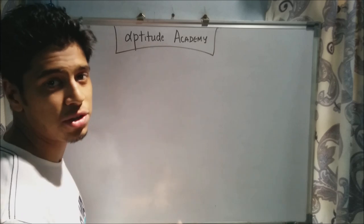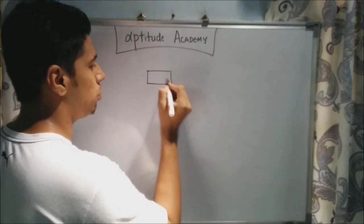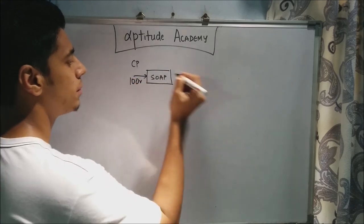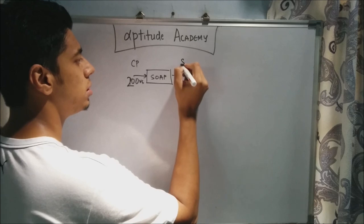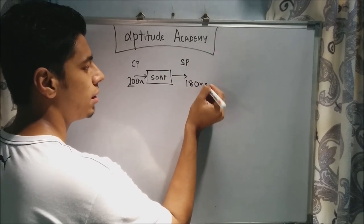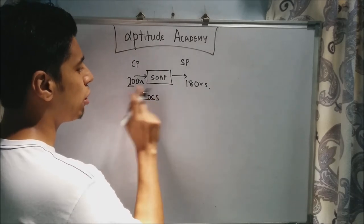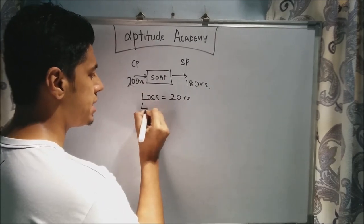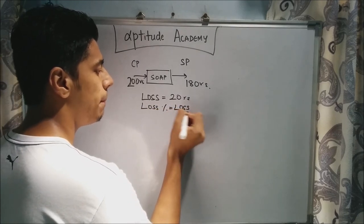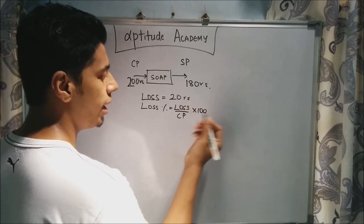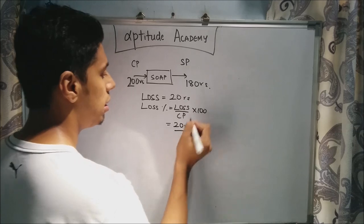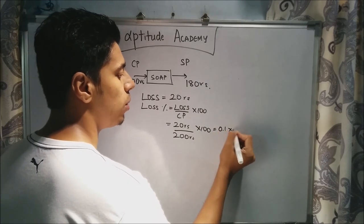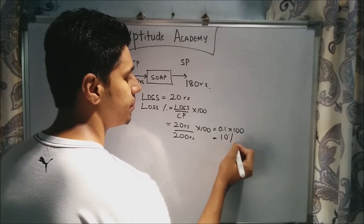To solve these problems, you need to reduce some information from the problem. In my previous lecture, I gave you the example of the soap. I bought it — that is the cost price — for 200 rupees, and I sold it for 180 rupees. That's my SP. So what will be my loss? It's quite obvious: 200 minus 180 is 20 rupees. What will be my loss percentage? Loss percentage will be loss by CP into 100. So 20 divided by 200 into 100 equals 0.1 into 100, which gives you 10% loss.